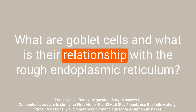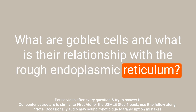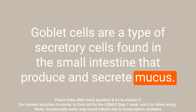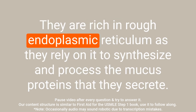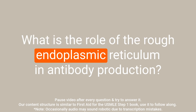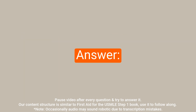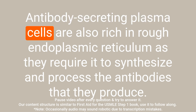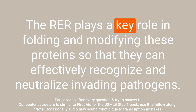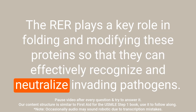Question: What are goblet cells and what is their relationship with the rough endoplasmic reticulum? Answer: Goblet cells are a type of secretory cell found in the small intestine that produce and secrete mucus. They are rich in rough endoplasmic reticulum, which they rely on to synthesize and process the mucus proteins they secrete. Question: What is the role of the rough endoplasmic reticulum in antibody production? Answer: Antibody-secreting plasma cells are also rich in rough endoplasmic reticulum, requiring it to synthesize and process the antibodies they produce. The RER plays a key role in folding and modifying these proteins so they can effectively recognize and neutralize invading pathogens.